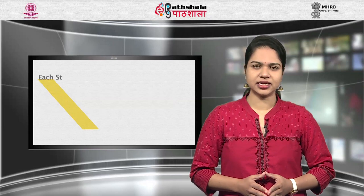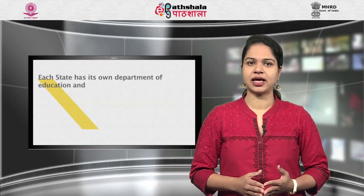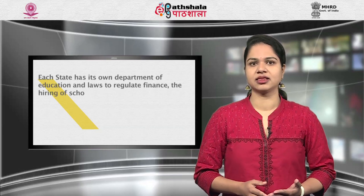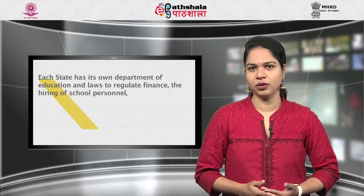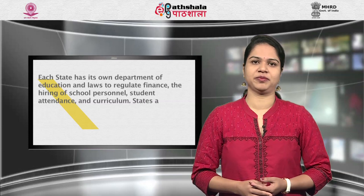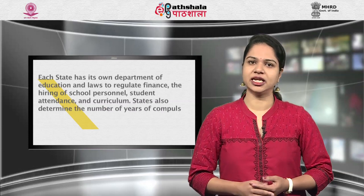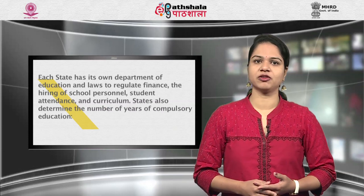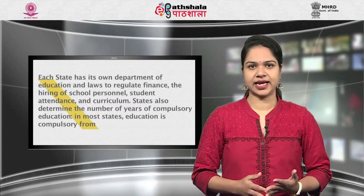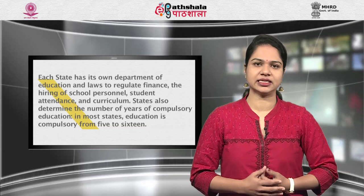Each state has its own department of education and laws to regulate finance, the hiring of school personnel, student attendance and curriculum. States also determine the number of years of compulsory education. In most states, education is compulsory from age 5 to 16.